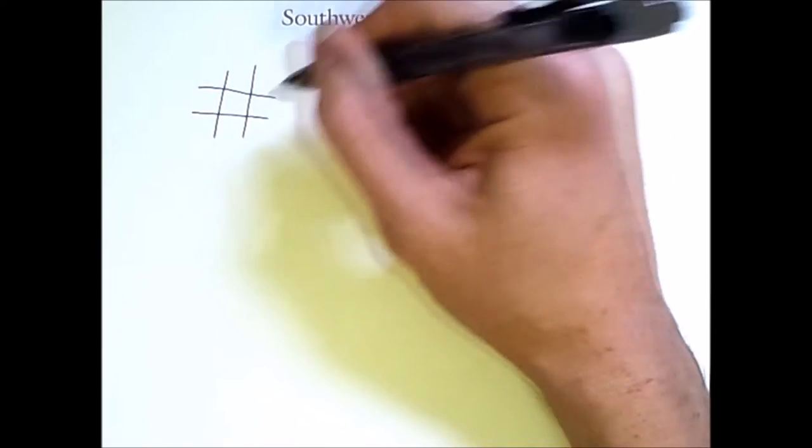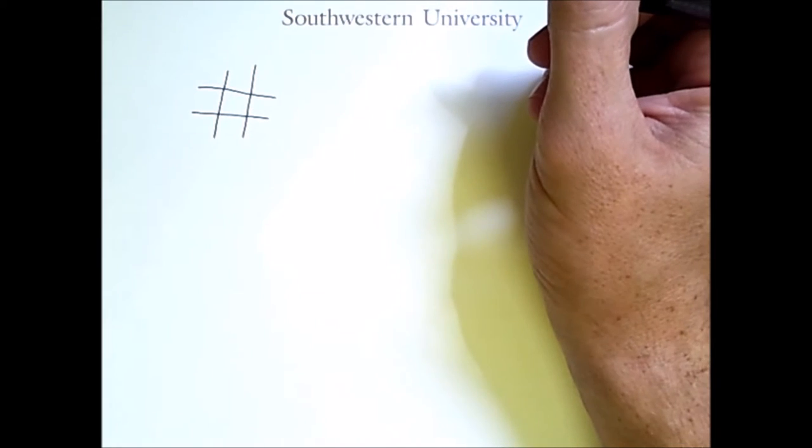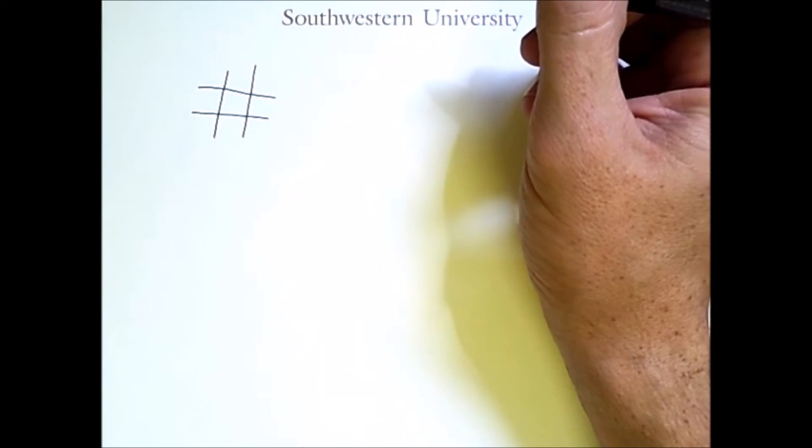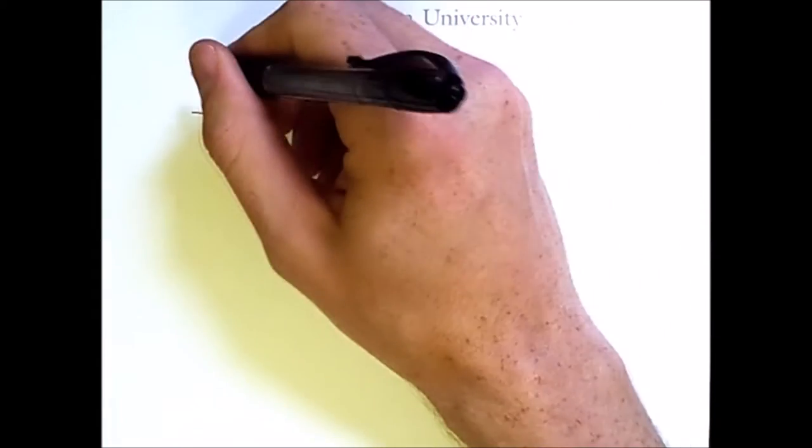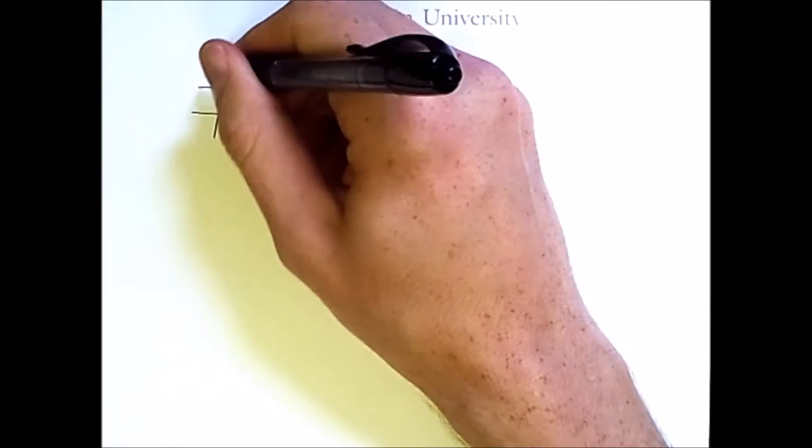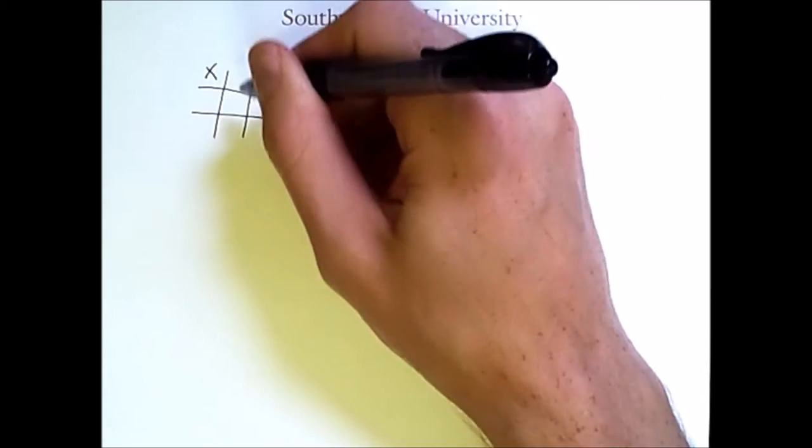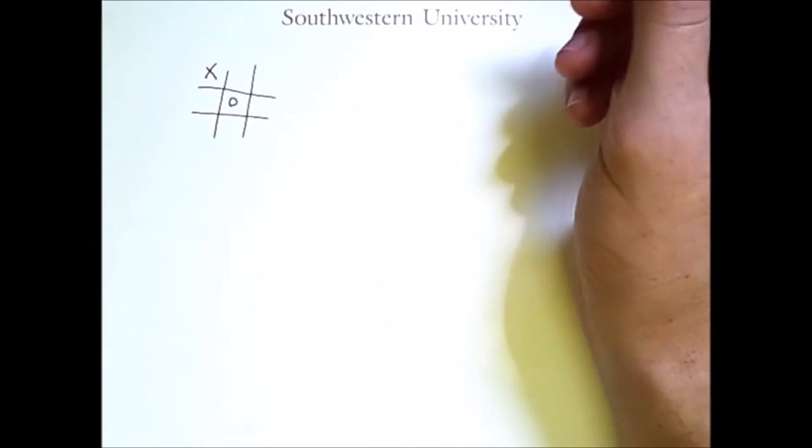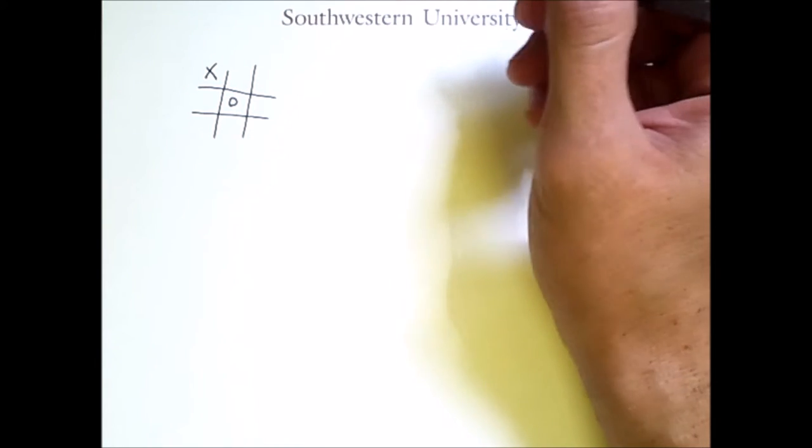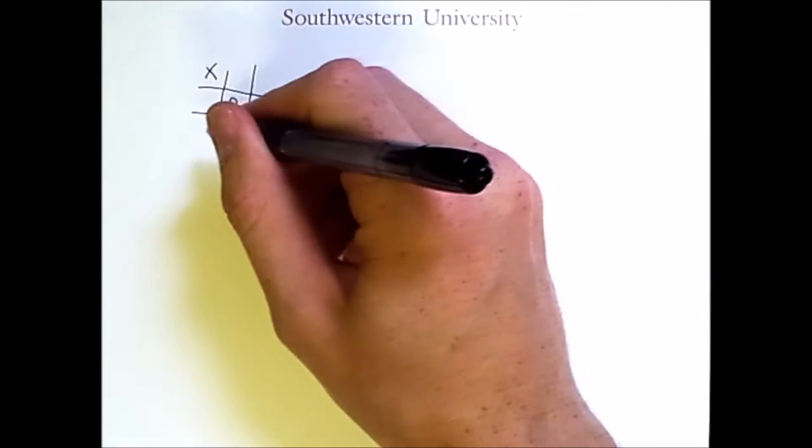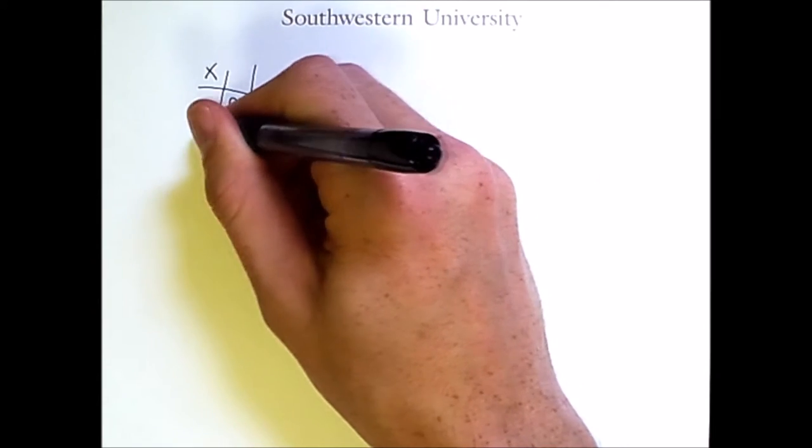Using the game of tic-tac-toe, also known as knots and crosses, as an example. In this game, players take turns placing their symbol in one of these nine spaces, either an X or an O. The goal is to get three of your symbol in a row, either horizontally, vertically, or diagonally.